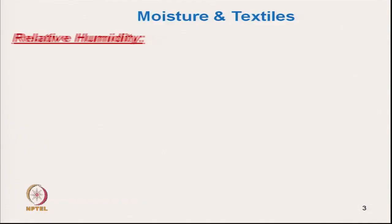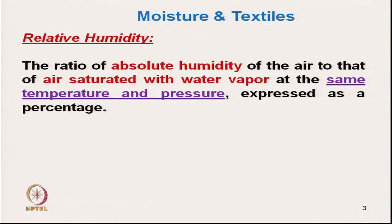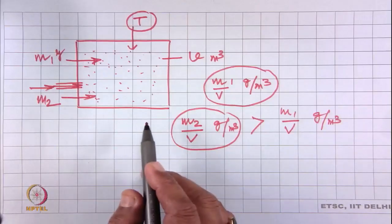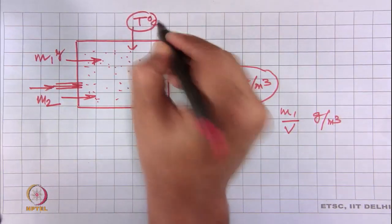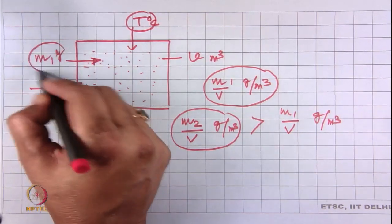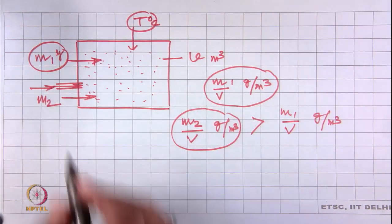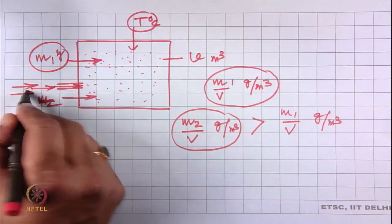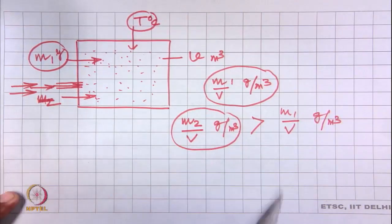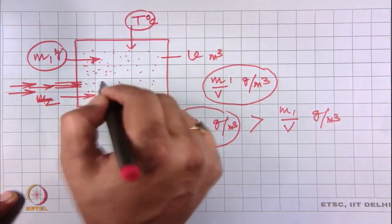What is relative humidity? Relative humidity is the ratio of the absolute humidity of the air to that of air saturated with water vapor, at the same temperature and pressure. In this room at temperature T degrees Celsius, suppose the mass of water vapor present is m1 — we gradually try to increase the moisture content in this room.